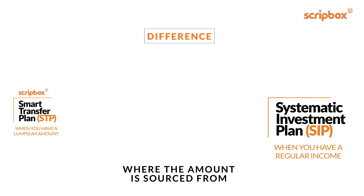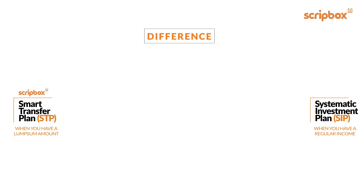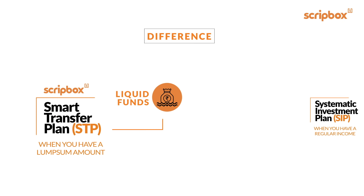In an SIP, the money is parked in and transferred from your bank account month-on-month. But with Scribbox Smart Transfer Plan, you invest a lump sum amount in liquid funds, which is then moved to equity funds every month.